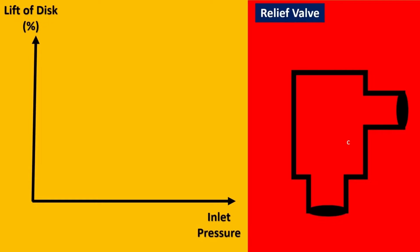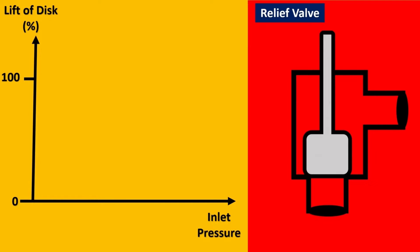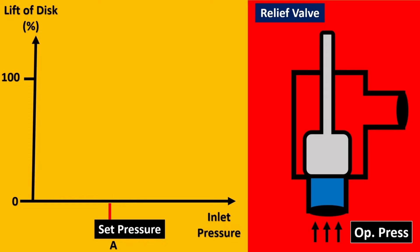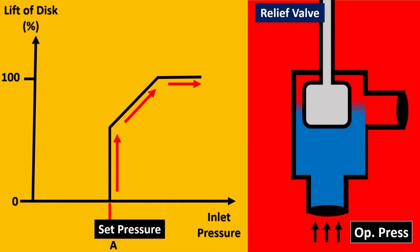Imagine we plot inlet pressure on the x-axis and lift percentage of the disc on the y-axis for a relief valve. We keep the range from 0 to 100 percent. As the operating pressure hits the disc but does not reach the set pressure — let's call it point A — the disc will never open. Once the set pressure is reached, the disc starts opening to some percentage and eventually reaches 100 percent, relieving all pressure to the outlet.